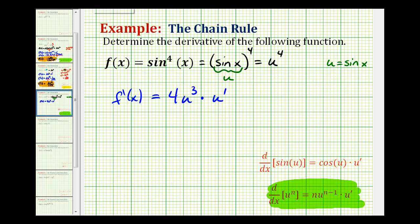But we want our derivative in terms of x. So we'll substitute sine x for u, and we'll have to determine u'. Well, u' would be the derivative of sine x, which is cosine x. So we'll have f'(x) equals 4 times sine x to the third, and then u' is equal to cosine x.